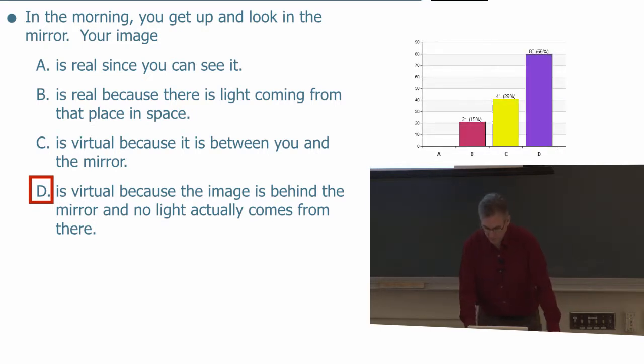The correct answer is D, and this is similar to what we got earlier today. The correct answer is D because the image is behind the mirror and no light can come from there through the mirror.